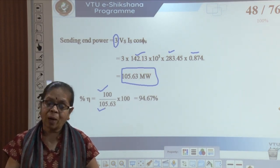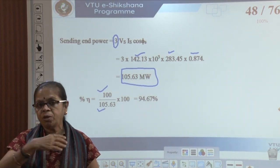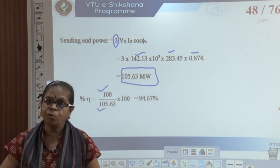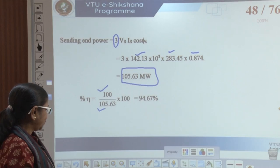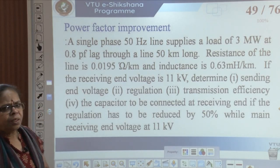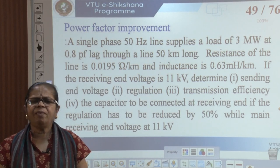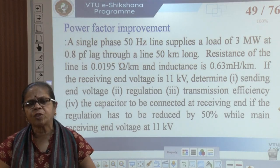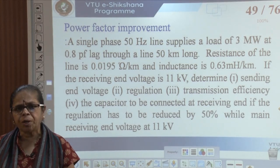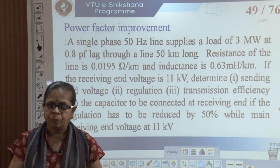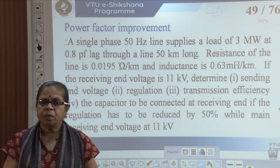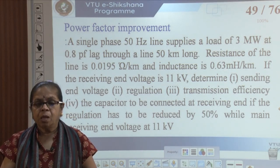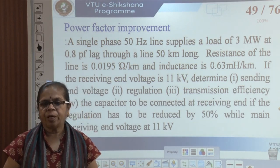That's why for long transmission lines DC transmission is good because it gives better regulation. Is there any way to improve the power factor? When you improve the power factor, for the same power you will draw lesser current. We'll see whether it can be done by considering a problem.